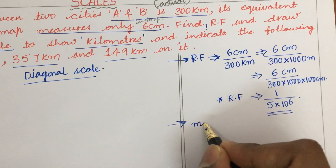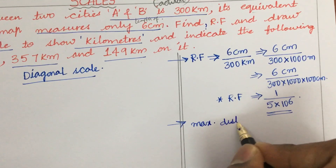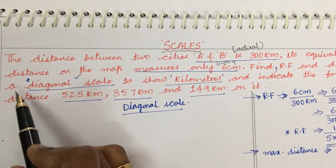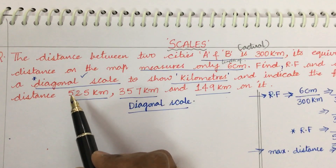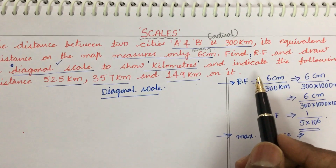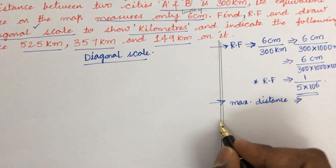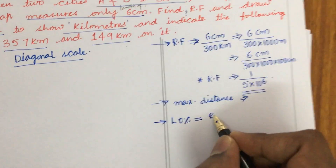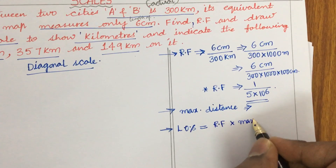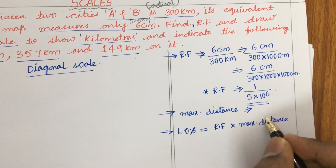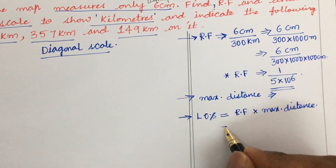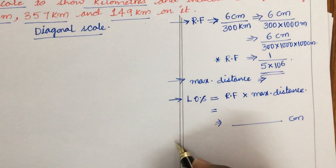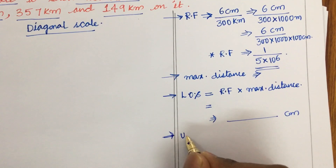Next, what is the length of the scale? Before that, we need to work out what is the maximum distance this scale can measure. Whether the maximum distance is given in the problem or not, you need to check. If you look here, like the earlier cases, the maximum distance is not mentioned in this problem. So we need to work out how to find it. The length of the scale is given as RF into the maximum distance, but the maximum distance is not given.